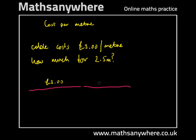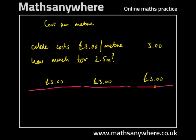We need a second meter to get us to two meters, and that's also going to cost three pounds. We don't want another whole meter — we only want half a meter. So if there's a meter, we just want half of it up to here. We need to share the three pounds by two to get the cost of half a meter.